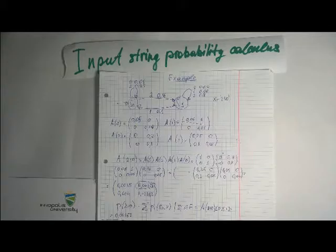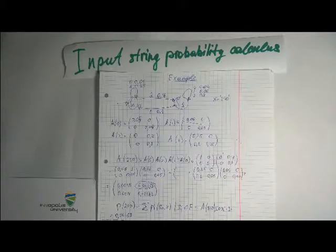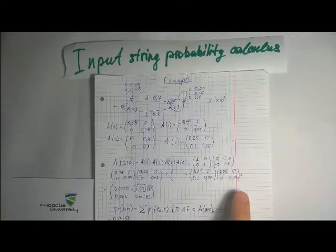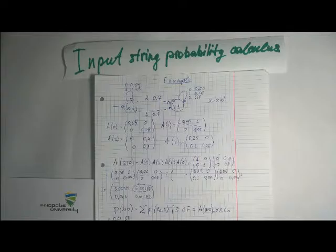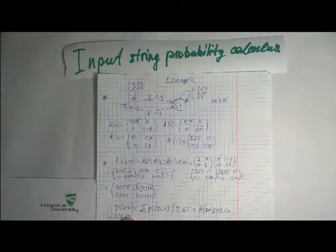Define matrices for transitions. Calculate matrices multiplication. So probabilities for X is this matrix. S0 is the initial state and S1 is the final state.